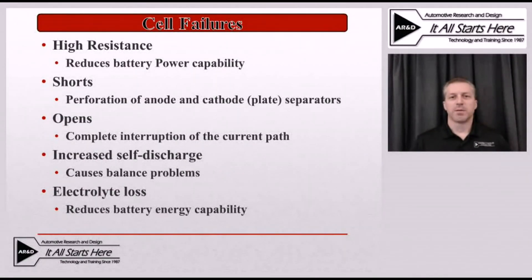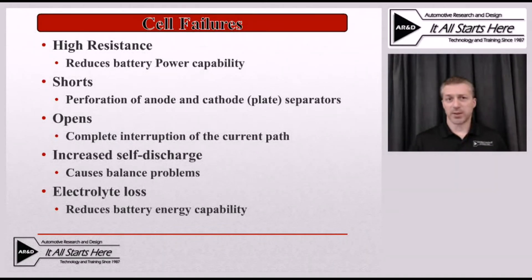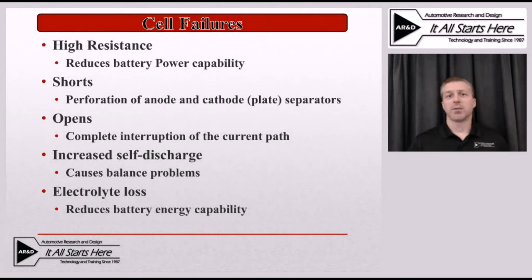Let's take a look at some of the cell failure types that can occur within these batteries. The first is high resistance — something within the battery cell causing it to no longer deliver enough current under load compared to what it was initially capable of. A high resistance problem can be caused by things like internal cell oxidation, which can be the result of over-discharge on these battery packs, and unfortunately that's even occurring during some of the service and diagnostic methods being promoted within the industry.